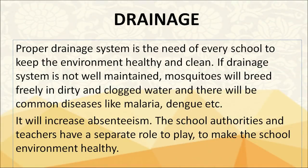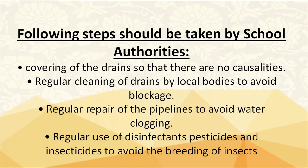Let's discuss the drainage system in schools. A proper drainage system is the need of every school to keep the environment healthy and clean. If drainage is not well maintained, mosquitoes will breed freely in dirty and clogged water, causing diseases like malaria and dengue, and increasing absenteeism. Steps to be taken by school authorities include: covering of drains to avoid casualties, regular cleaning of drains by local bodies to avoid blockage, regular repair of pipelines to avoid water clogging, and regular use of disinfectants, pesticides and insecticides to avoid breeding of insects.